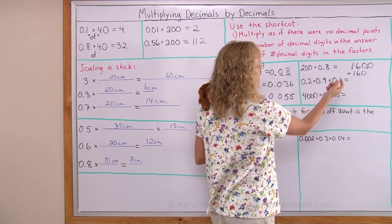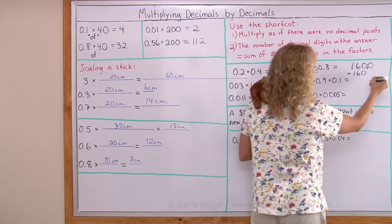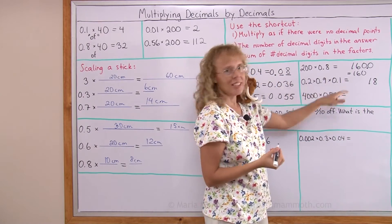Here multiply those three numbers. Two times nine times one equals eighteen. And then the decimals. There's one, two and three decimals again.